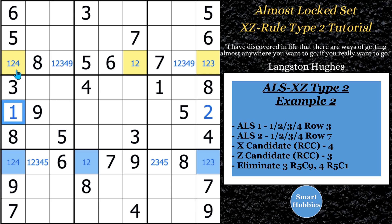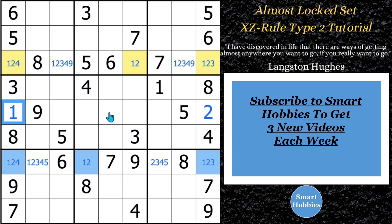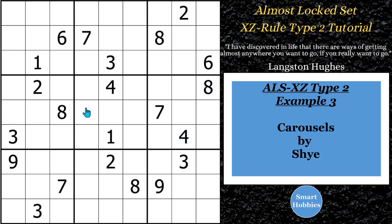This is an easier one to find because of the way KeenLux telegraphed it beautifully in Rotational Flow. Let's move on to our third and final example — a puzzle you haven't seen before. Don't forget to subscribe to Smart Hobby so you don't miss any new content; I put out a new video every Tuesday, Friday, and Sunday. Our third example is a puzzle called Carousels by Shai, and it was featured and solved on a few other channels previously. Shai's intended logic included an almost lock set type two.